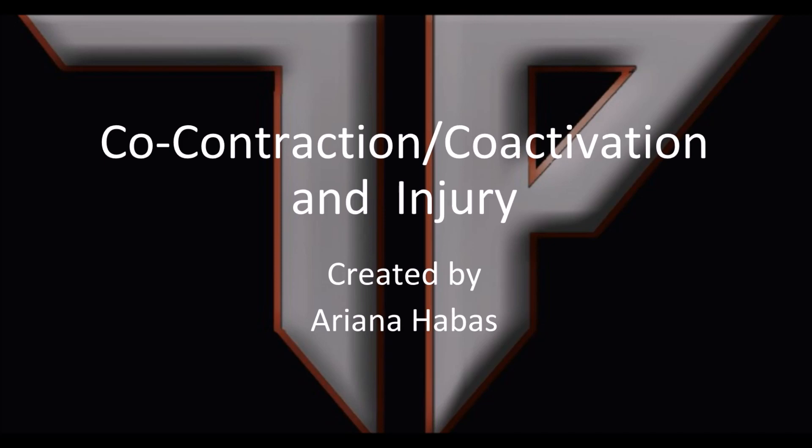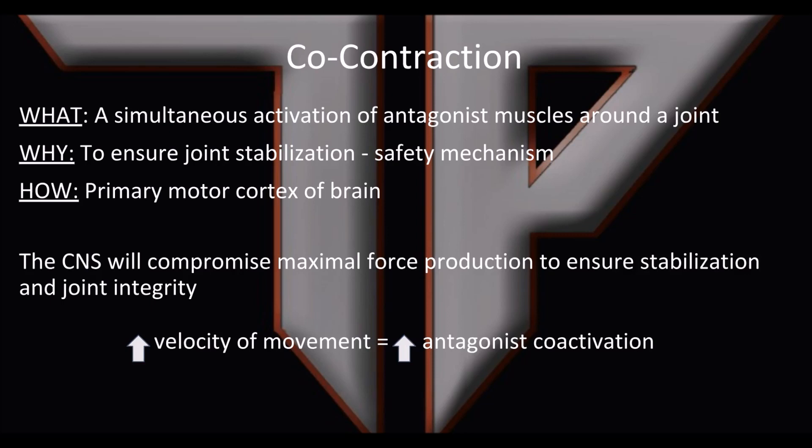What I want to talk about today is some of my deeper thoughts on injuries and why they occur — at least for soft tissue injury — and whether it's joint stability issues or just soft tissue. One of the big reasons is that you have a bad co-contraction or a bad co-activation taking place in your body, which is basically a simultaneous activation of the antagonist muscles around the joint.